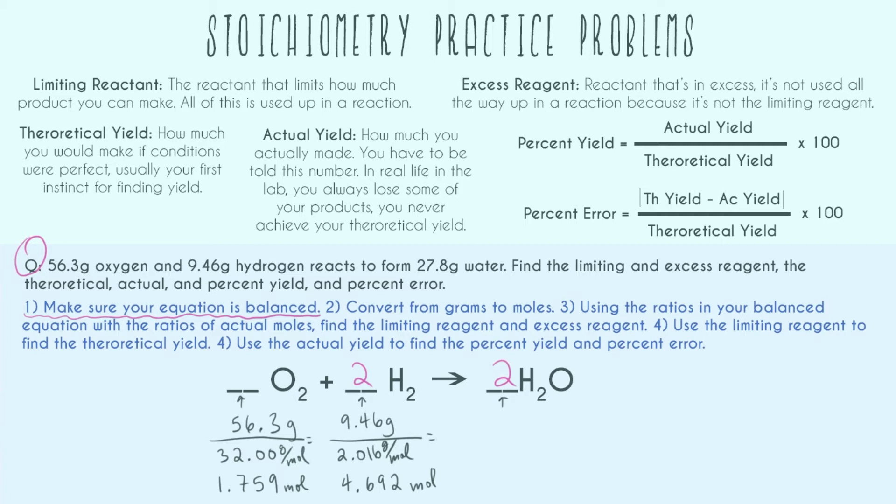Now we have our two numbers of moles. And you may have noticed that even though we were given 27.8 grams of water, I haven't dealt with that number yet. And that's because I'm going to start this problem by finding the limiting reactant and the excess reactant. You can also see up here in my definitions, I have reactant for one, reagent for the other. It doesn't matter, reactant, reagent, same thing. And so the 27.8 grams of water, that's a yield, which we'll deal with later.